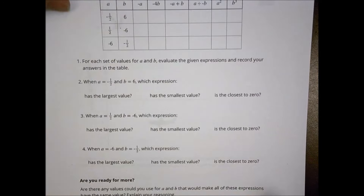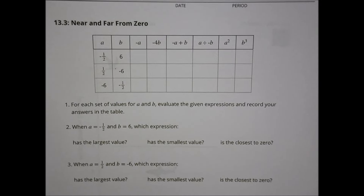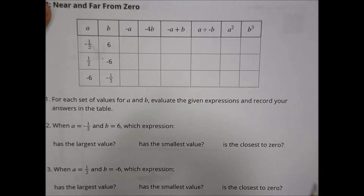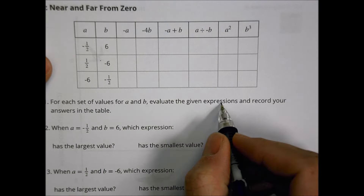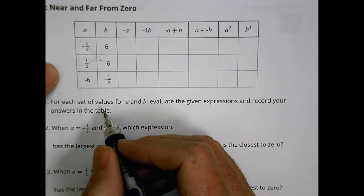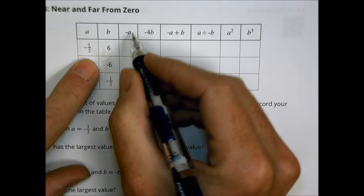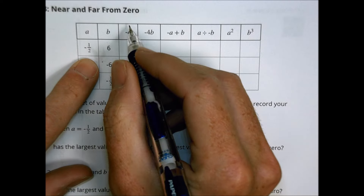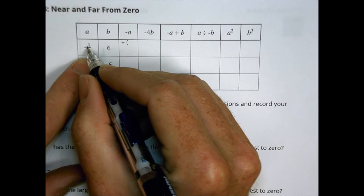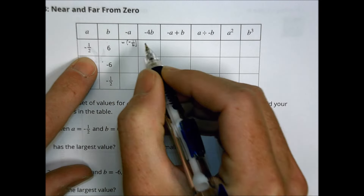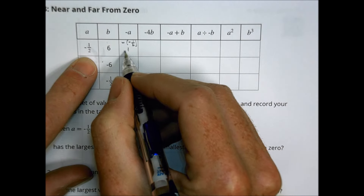Moving on: Activity 13.3, near and far from zero. For each set of values of A and B, evaluate the expressions and record your answers in the table. For example, if A equals negative one-half, and I want to find negative A, I take a negative sign and put it in front of negative one-half. Minus and minus a half is the same as positive one-half.